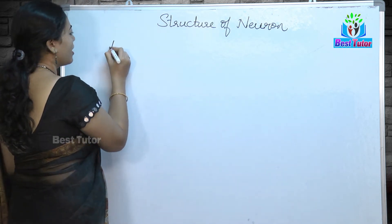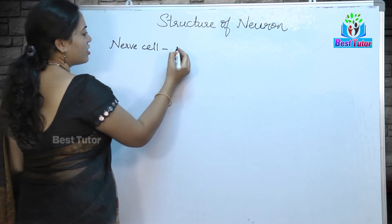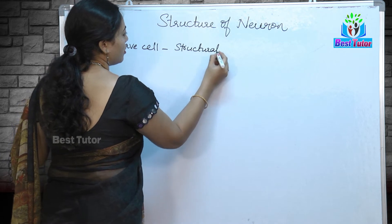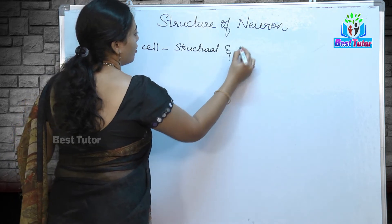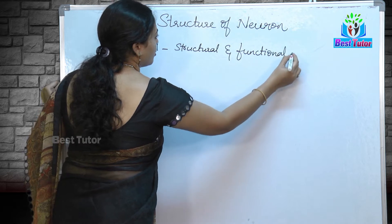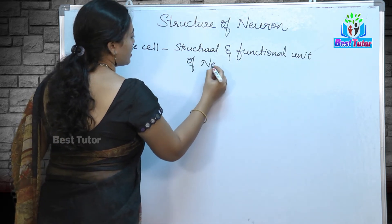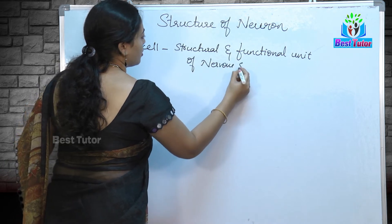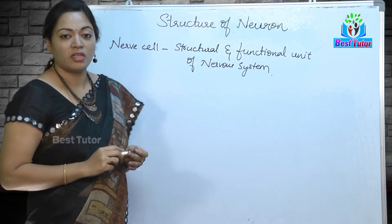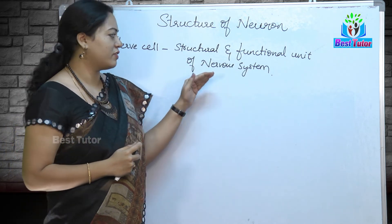A neuron is also known as a nerve cell, which is the structural and functional unit of the nervous system.